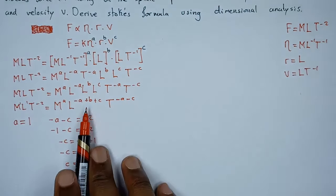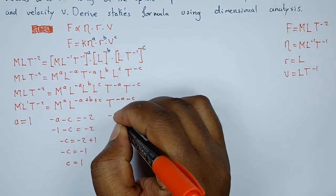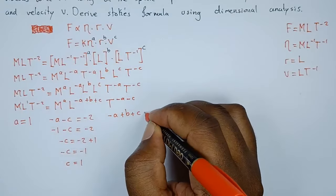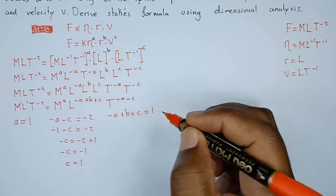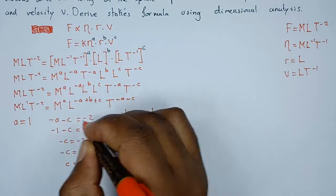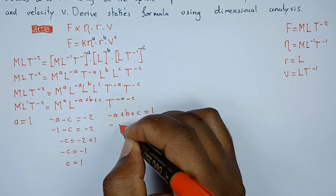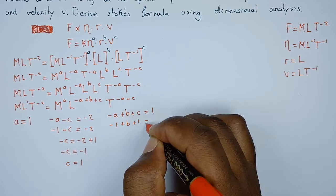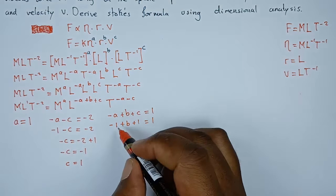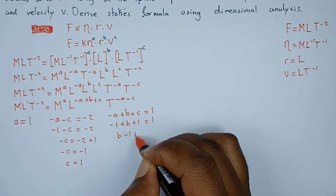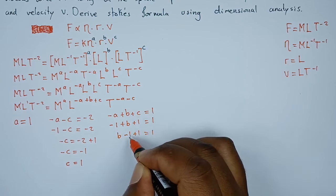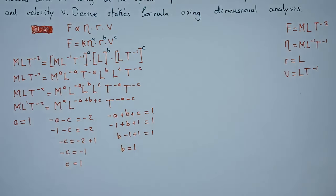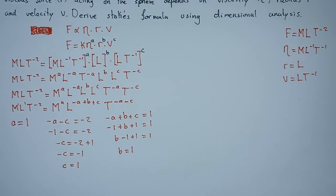So we have A and we have C. How do we find B? The powers of L. The powers of L, we have negative A plus B plus C, this side the powers of L we have positive one. A is one, so negative one. C is one. All this equals one. So B minus one plus one equals one, which means B also equals one.